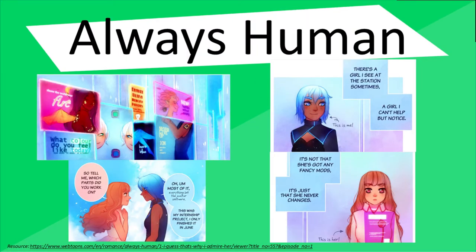Always Human is about nanobots — a technology that allows you to change your appearance as many times as you want. In this universe, there's a lady who has a disability and cannot use nanobots. Another girl notices she never changes her appearance. At the beginning, she feels insecure because she can't change her looks, but the other lady accepts her as she is and they fall in love. It's a story about how they grow as people, achieve their dreams, and there's a lot of romance.